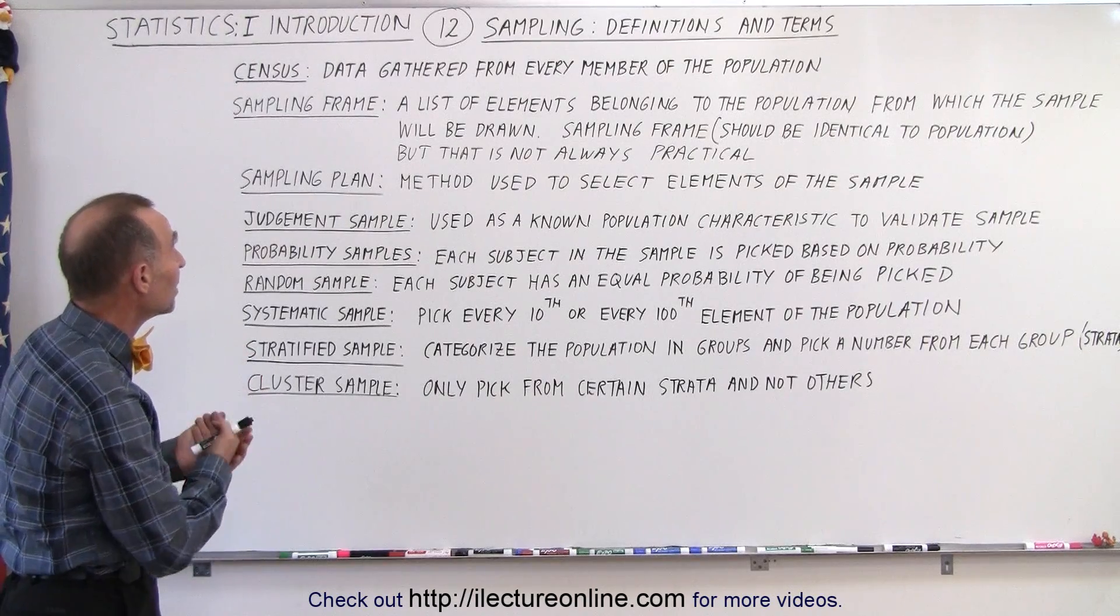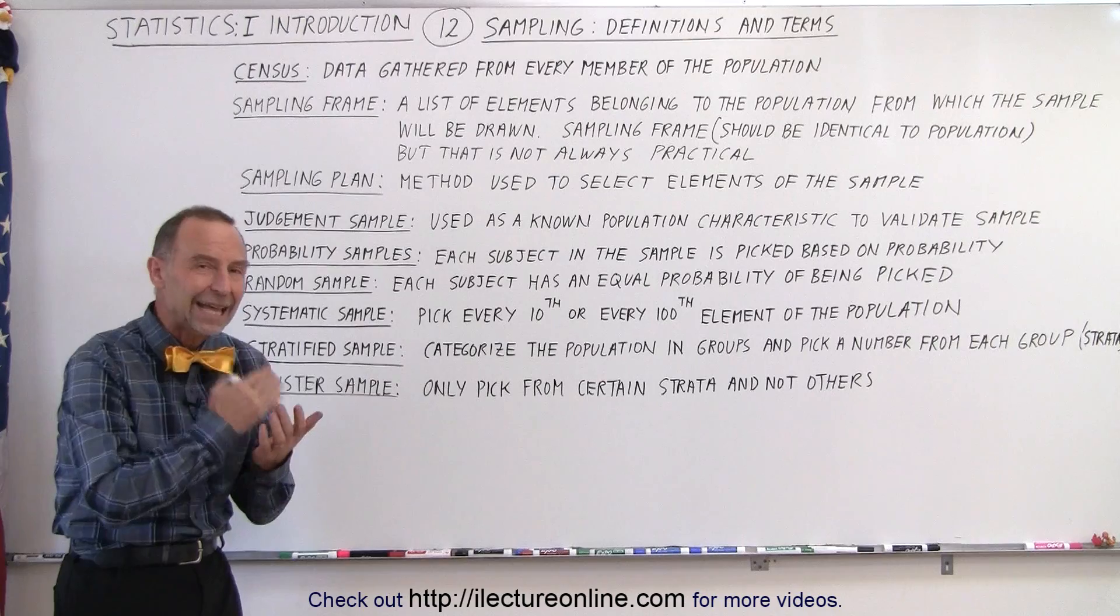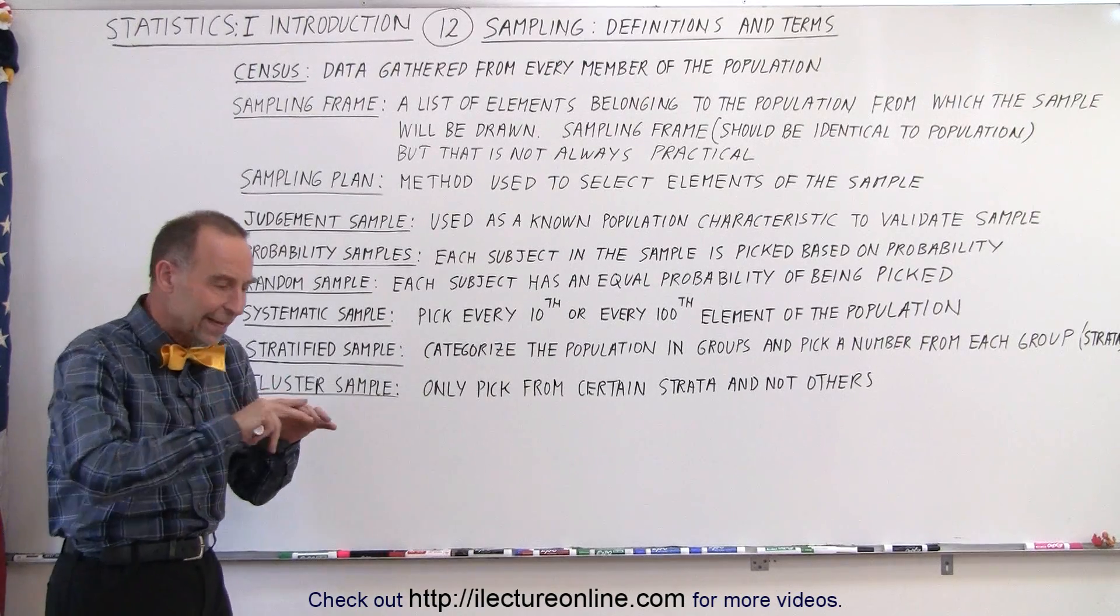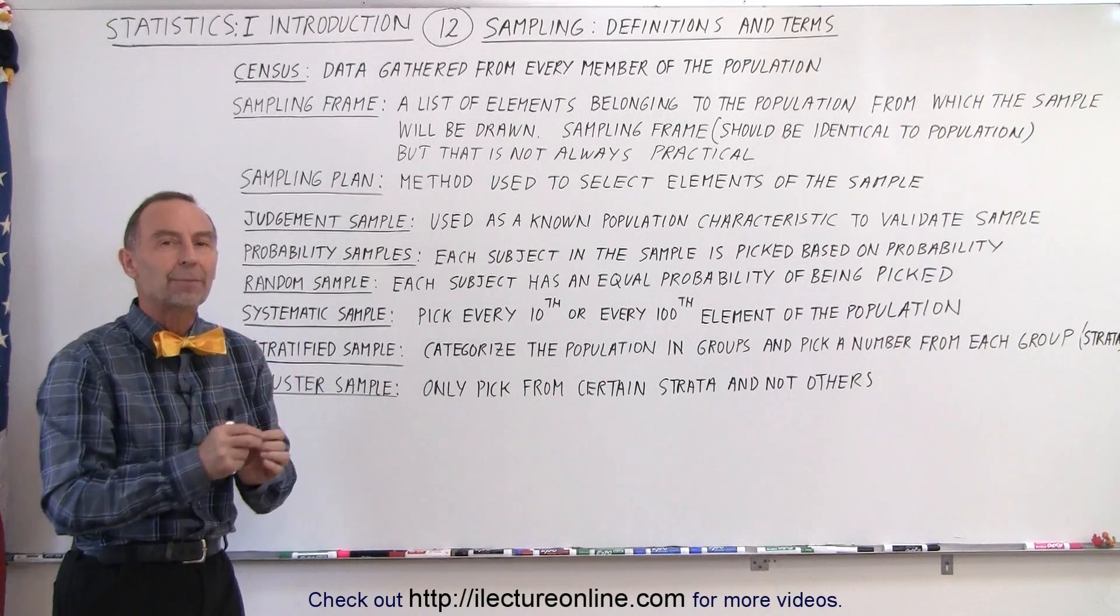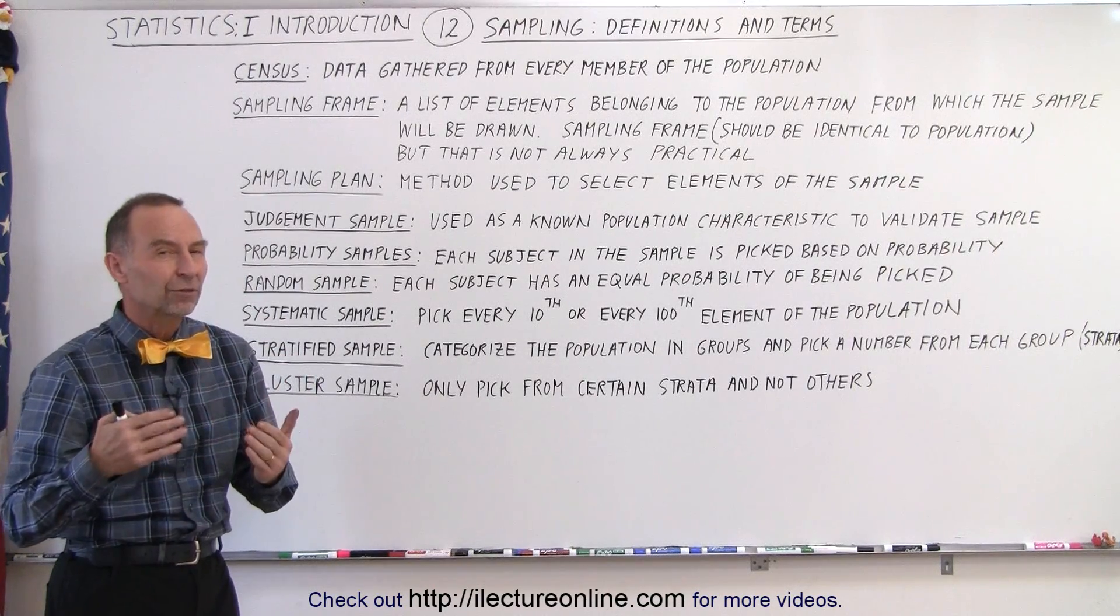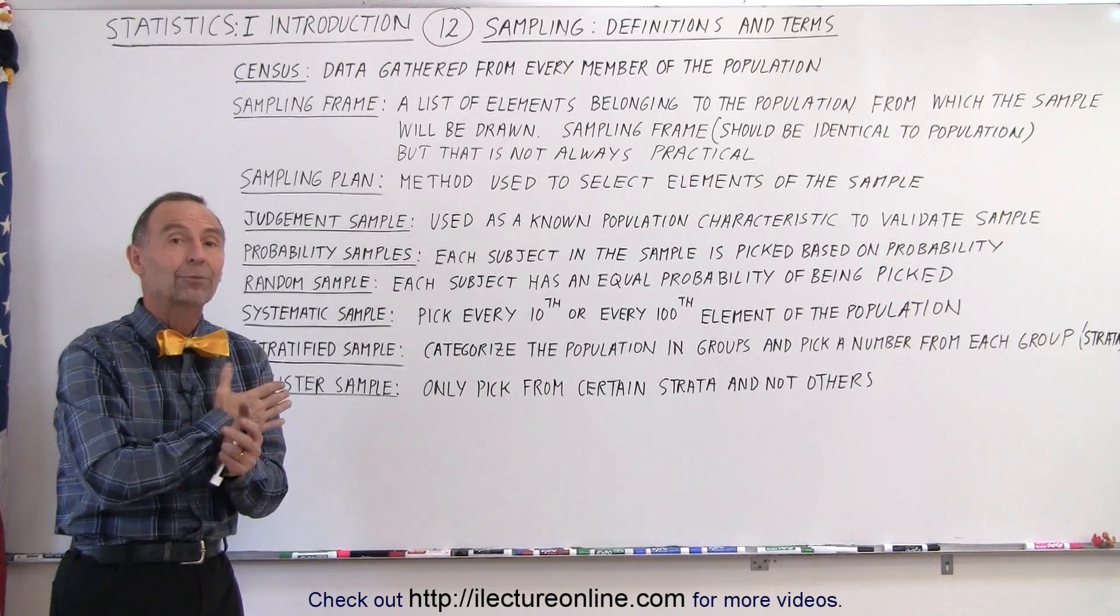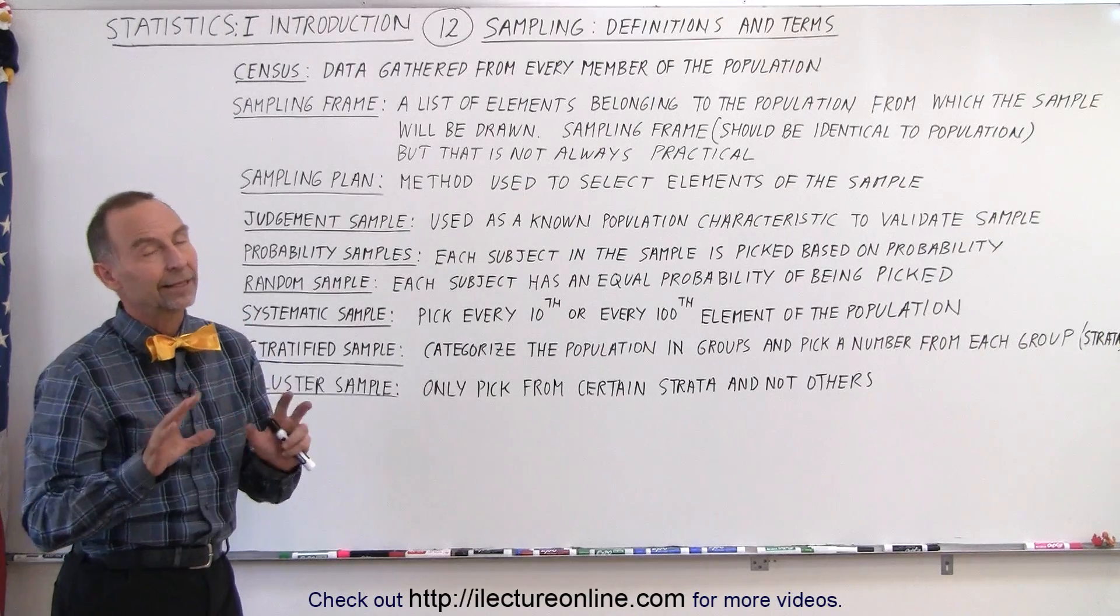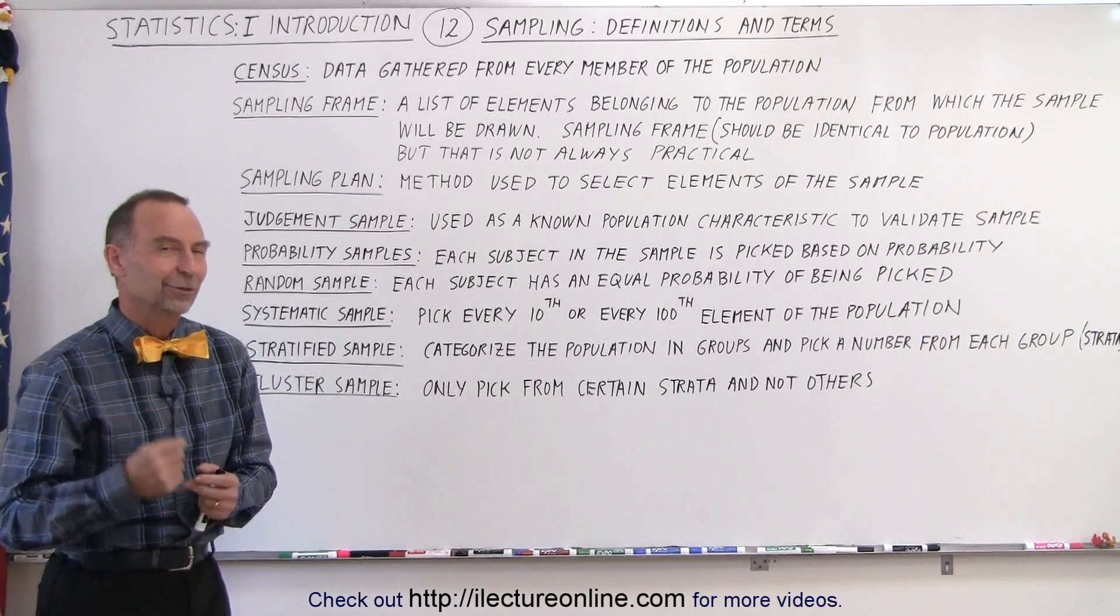Well, it turns out that the census means that you're gathering data from every member of the population, every single one. You don't take a representative sample, you take data from every member of the population. That's very difficult to do and very expensive, so it's not done very often for obvious reasons, but at least that way you get absolute accurate data. Again, of course, if everyone participating in the census is telling the truth.